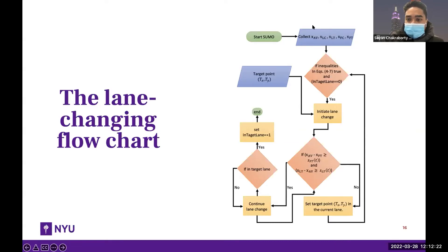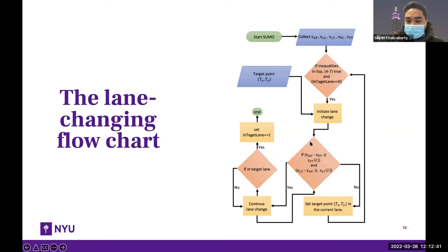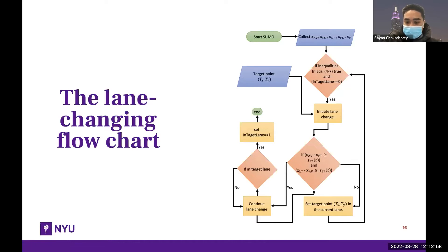In the lane changing flowchart: we collect the longitudinal position of the vehicles and check all inequalities. If these inequalities are all satisfied, we initiate lane change with the definition of the target point. Once lane change is initiated, we check the safe distance from surrounding vehicles in the target lane. If safe distances are satisfied, we continue the lane change until we reach the target lane. But if the AV is not at a safe distance at any point during the lane change, we abort and define the target point in the current lane.